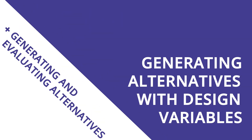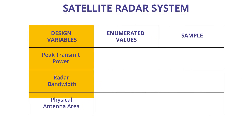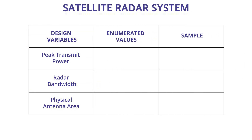In this segment we're going to talk about operationalizing design decisions via design vectors. A design vector is a set of design variables that specify the aspects of a design choice that are under our control.